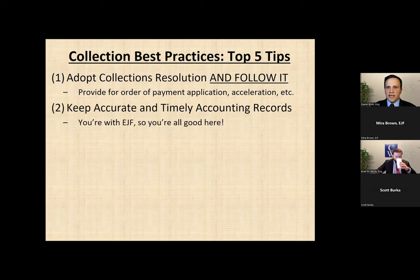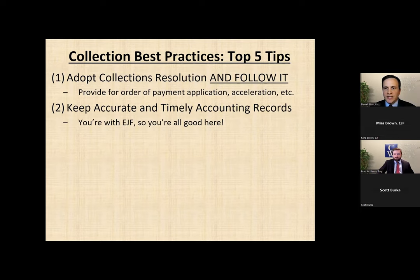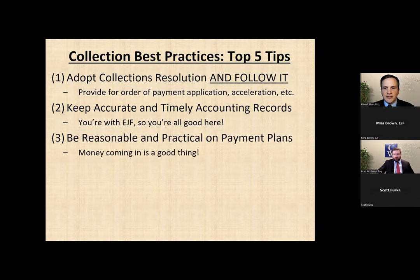Number two: keep accurate and timely accounting records. You all on this call are with EJF so I'm sure you're all good here, but it is something important to keep in mind, especially if and when accounts get turned over to legal counsel. We need those records to be absolutely accurate and timely recorded, because if and when we get before a judge we need to have everything straight. Before it gets to us, make sure all your documents are in order and everything looks right, because this is something that can take our paralegals some time to figure out if there are problems, and that can slow things down. Accurate accounting is very important in collections.